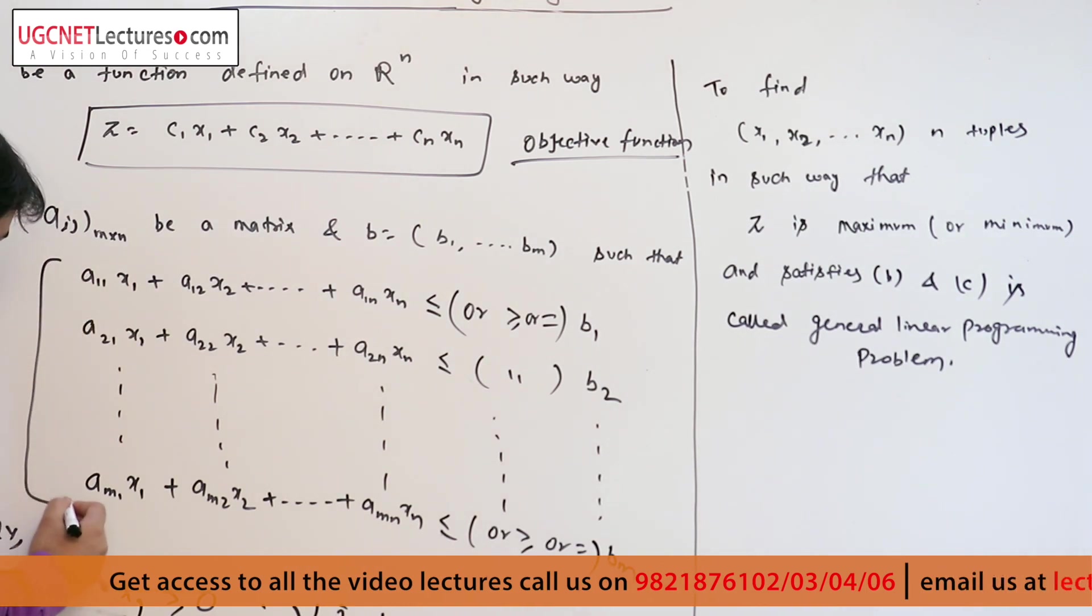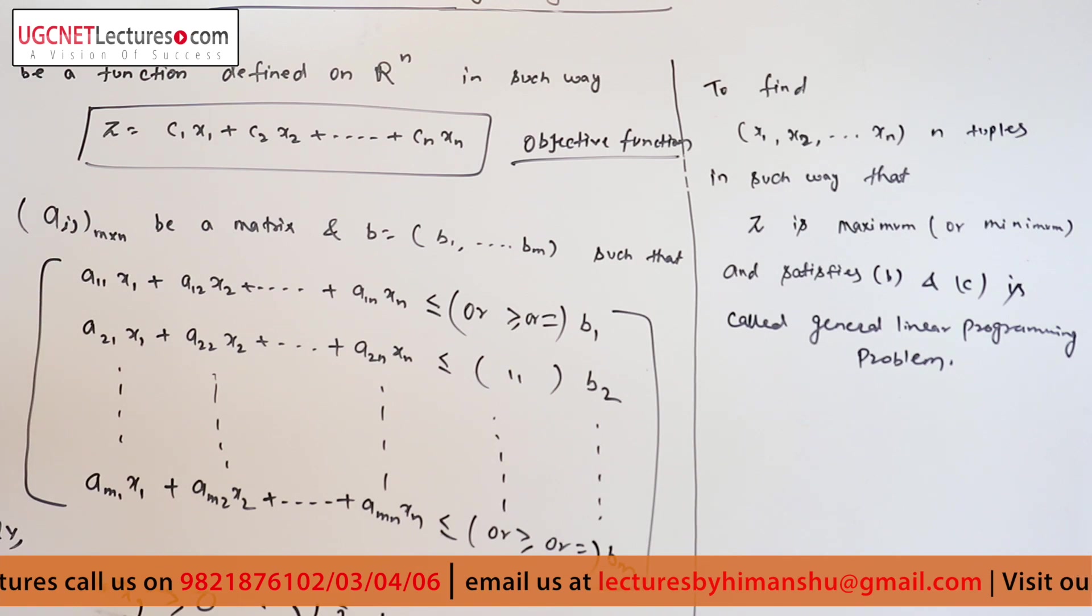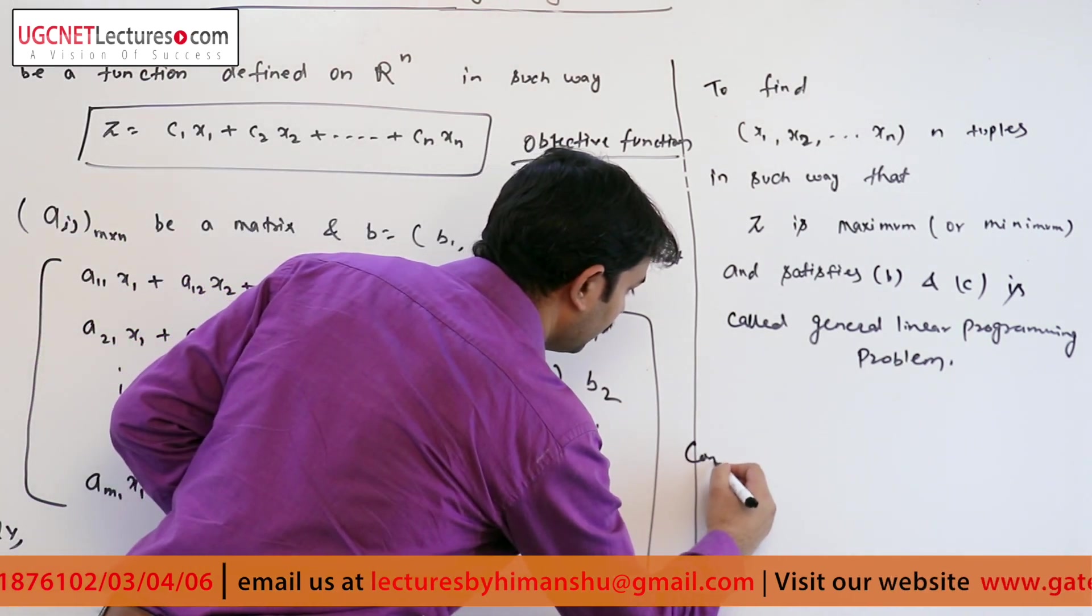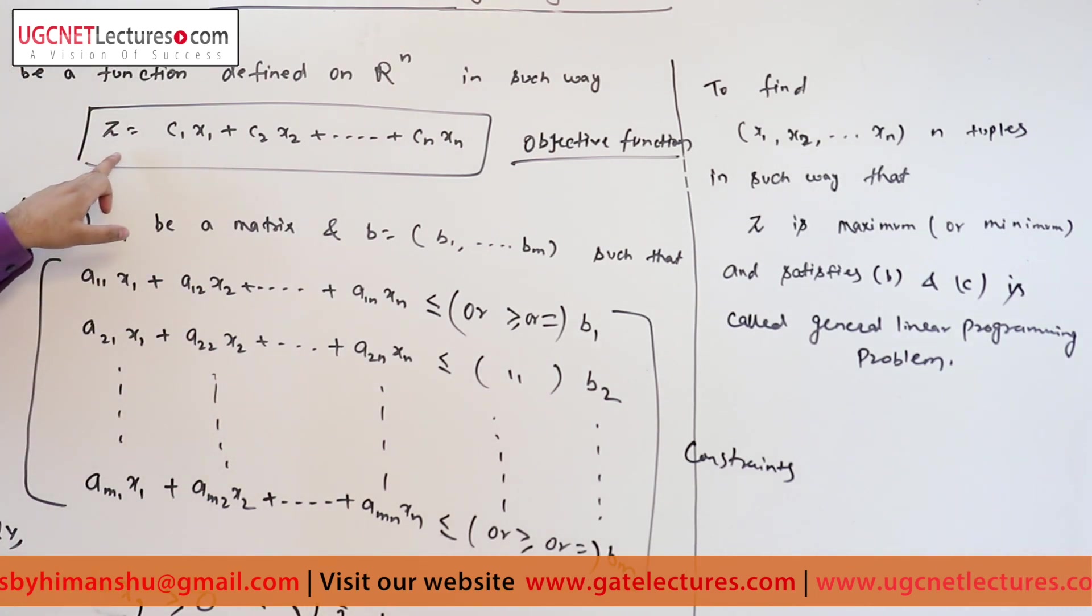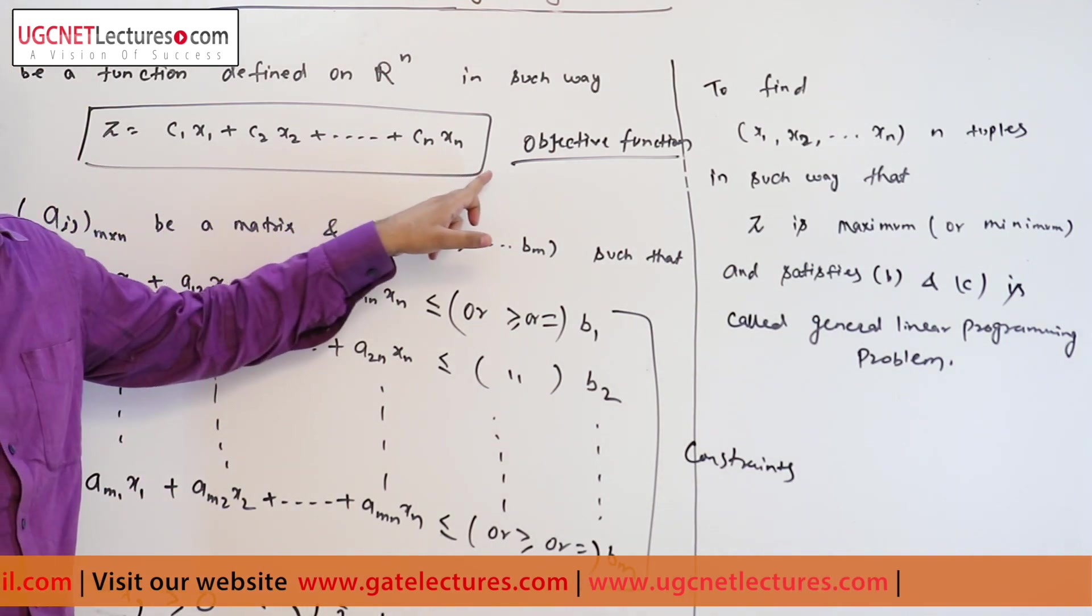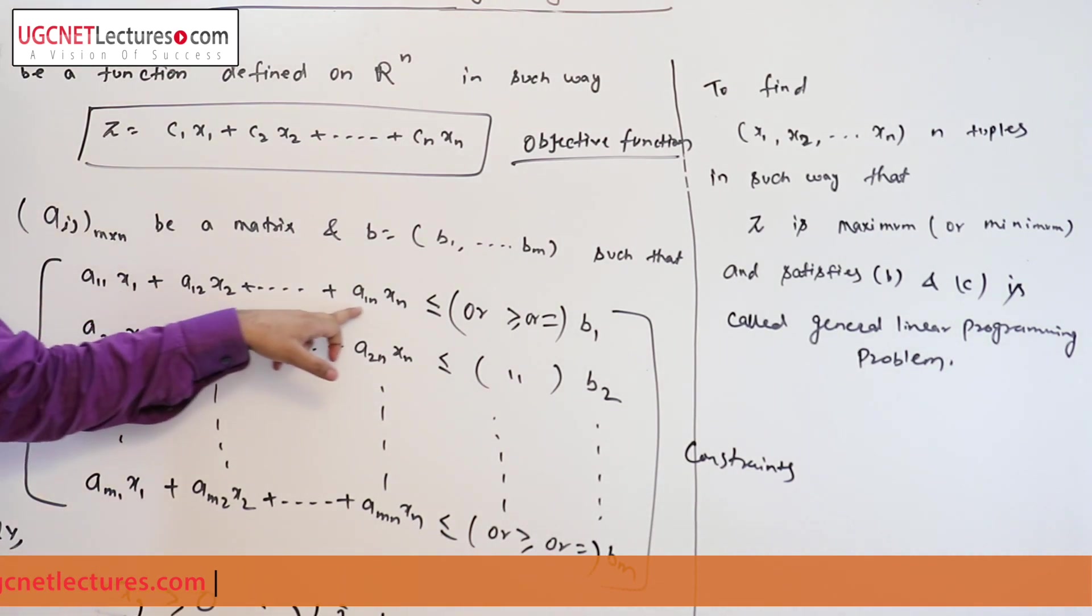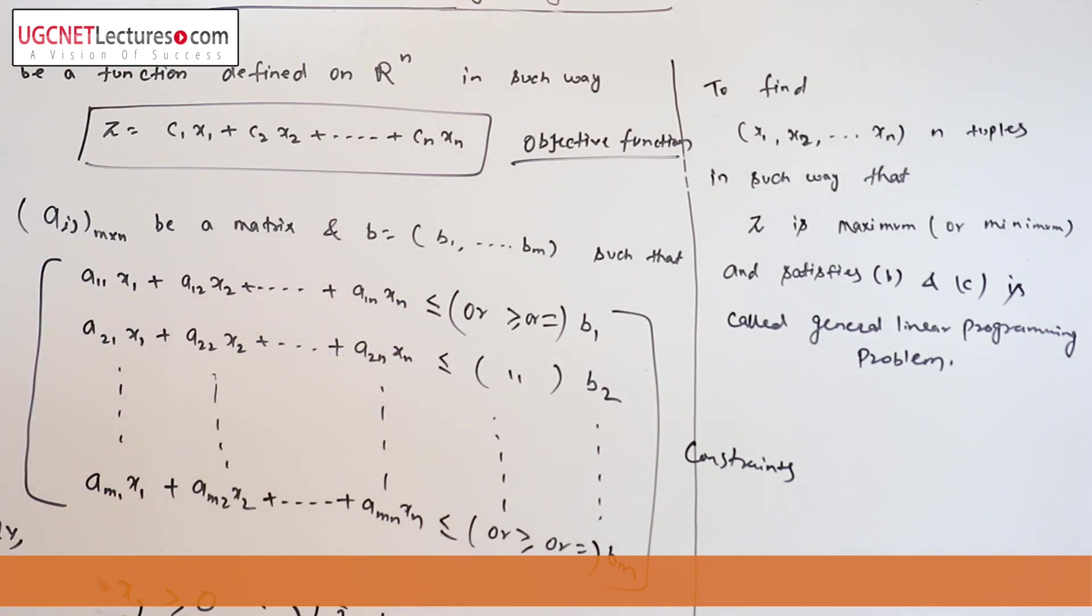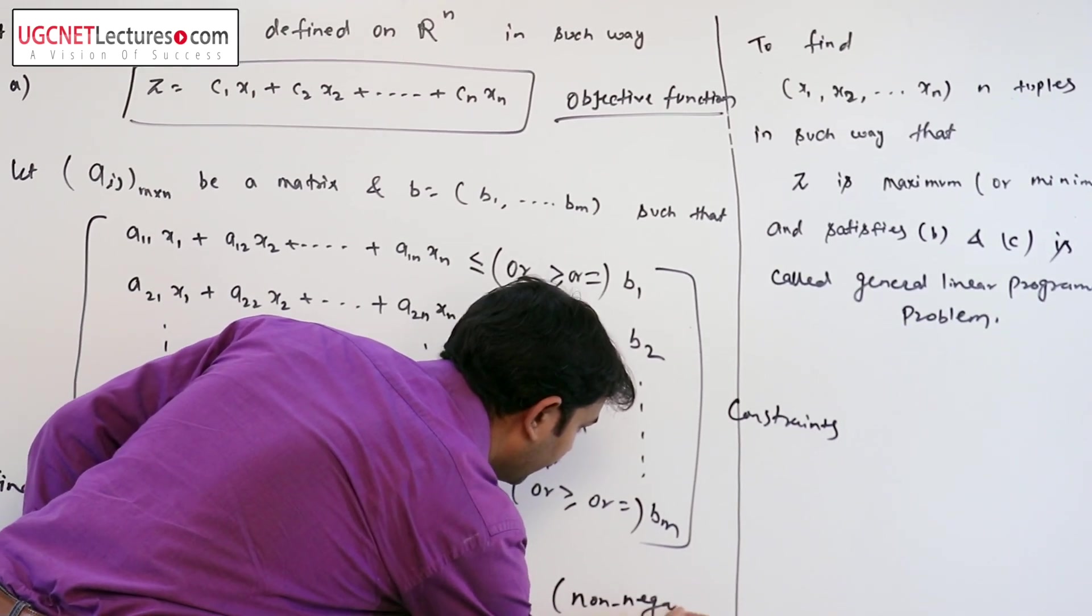Here the b, this is known as constraints. As you can see, this z is linear in x₁ to xₙ and also the inequalities in equation b, it is also linear equations. And finally, xⱼ's are positive, also known as non-negative restriction.